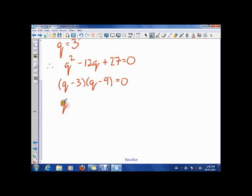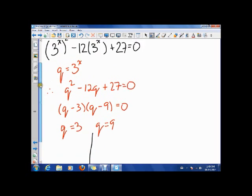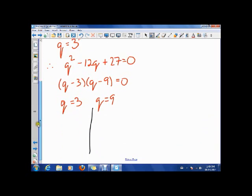So this gives us that q is 3 and that q is 9. But remember, again, I don't want to know what q is. I want to know what x is. So remember, q was 3 to the x, so 3 to the x is 3. Well, that x has to be 1, right? Because 3 to the power of 1 is 3.